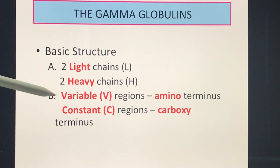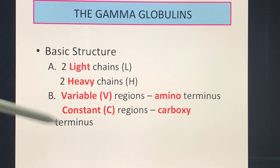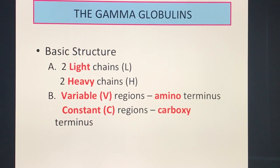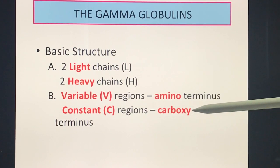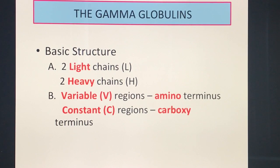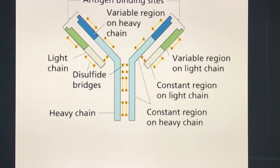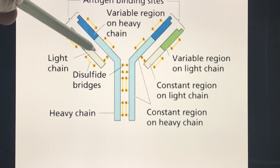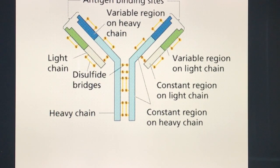All gamma globulins also have two regions. The first is the variable region (V), and the second is the constant region (C). The variable region contains the amino terminus (N), while the constant region contains the carboxy terminus (C). The light chain is on the outside, and the heavy chain is on the inside, connected by disulfide bridges.